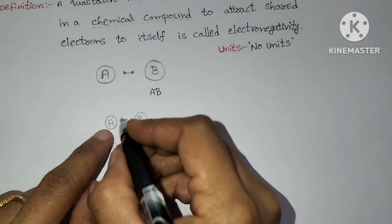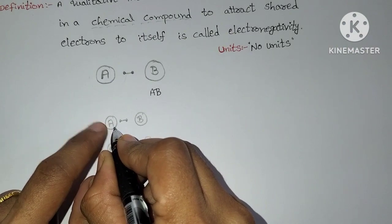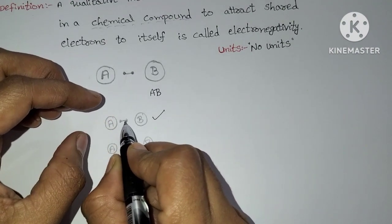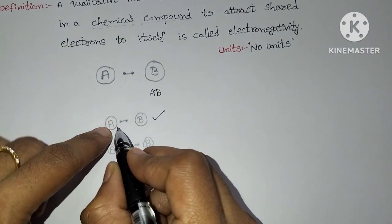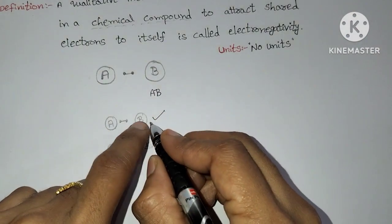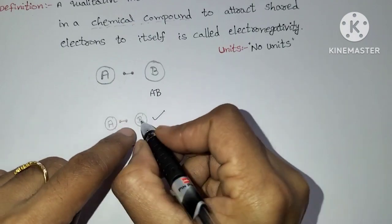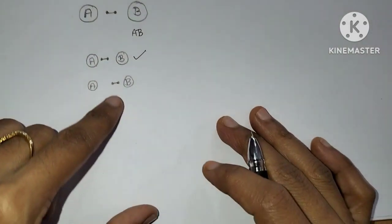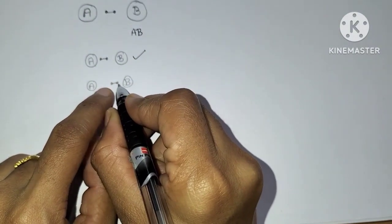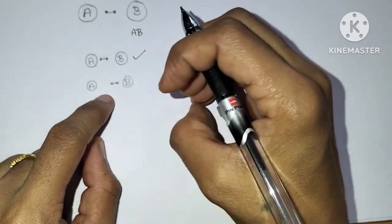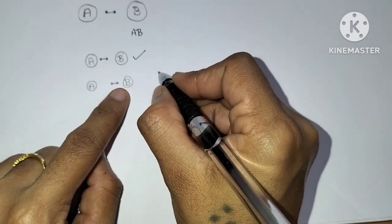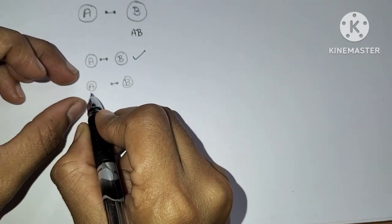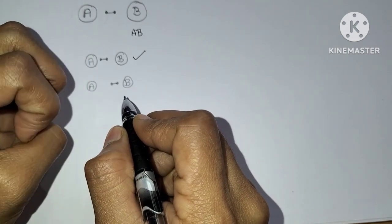I have mentioned two more examples here. In the first condition, A is attracting the two shared pair of electrons towards its direction, so A has more electronegativity compared to B, and B has less electronegativity because it has less ability to attract the shared pair of electrons. In the second condition, B is attracting the shared pair of electrons towards its direction, so B has more electronegativity and A has less electronegativity compared to B.